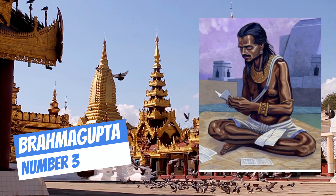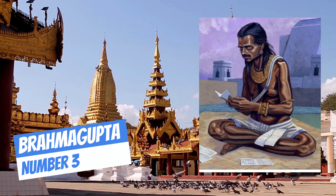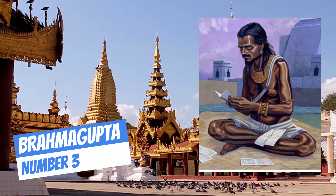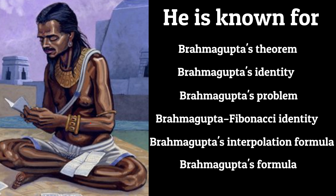Number 3: Brahmagupta. Brahmagupta was an Indian mathematician and astronomer, and the first to give rules for computing with zero. He is known for Brahmagupta's theorem, Brahmagupta's identity, Brahmagupta's problem, the Brahmagupta-Fibonacci identity, Brahmagupta's interpolation formula, and Brahmagupta's formula.